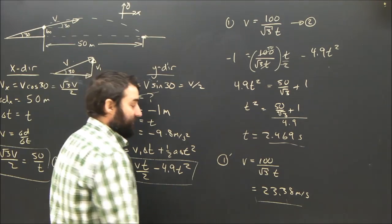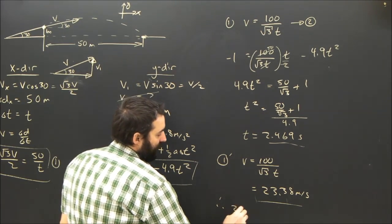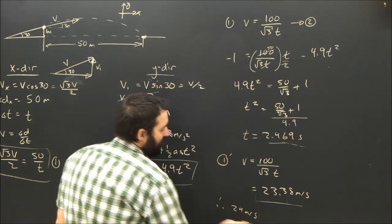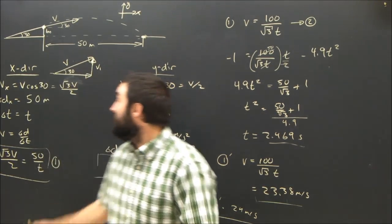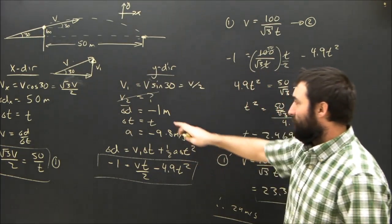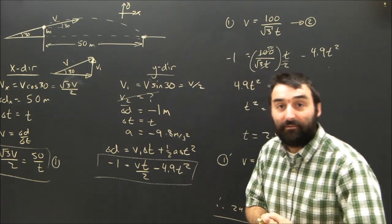And that's what the question asked you for, for the speed. So in my final sentence, I'm going to write therefore the speed was 24 meters per second. Because the question only had two significant figures. 30 degrees, 50 meters. Ooh, do I need to round to one? Nope, 1.0 meters was the displacement. Good.